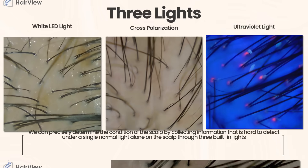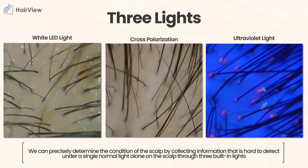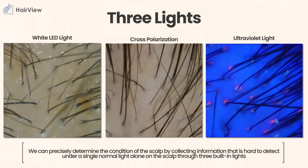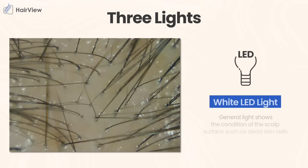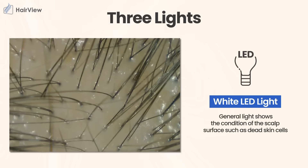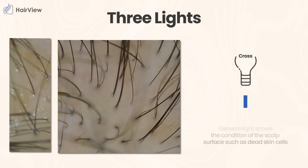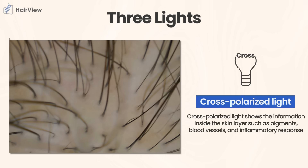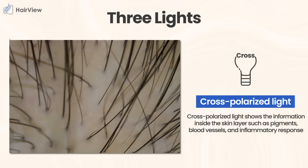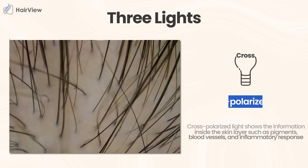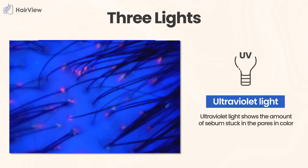We can precisely determine the condition of the scalp by collecting information that is hard to detect under a single normal light alone, through three built-in lights. General light shows the condition of the scalp surface such as dead skin cells. Cross-polarized light shows information inside the skin layer such as pigments, blood vessels, and inflammatory response. Ultraviolet light shows the amount of sebum stuck in the pores in color.